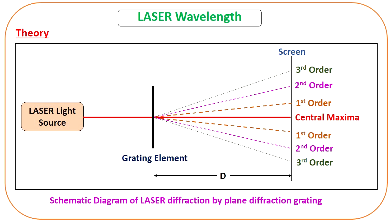Then you will get the first order spot, second order, third order, and similarly to the right side, first order, second order, third order and so on. This distance from central maxima to first order is D1, and similarly the distance from central maxima to first order on the left side is D2. We will find the mean value to get the mean distance for first order, and similarly mean distances for second order, third order, and so on.